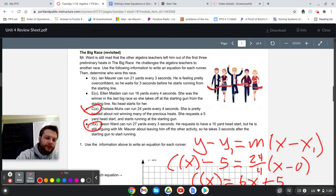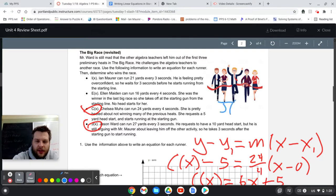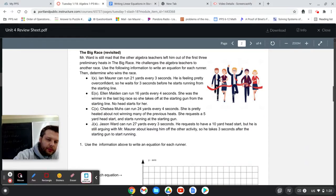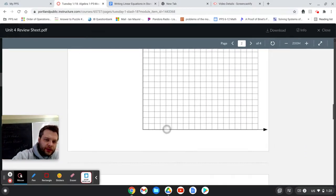I'll use a different color for Jason. Jason can run 27 yards every three seconds, wants a 10 yard head start and also takes off three seconds after the race begins. So he would be j of x minus 10 for his head start equals 27 over three times x minus three. We could convert that if we wanted to, or you can just leave it as is. Alright, moving on.